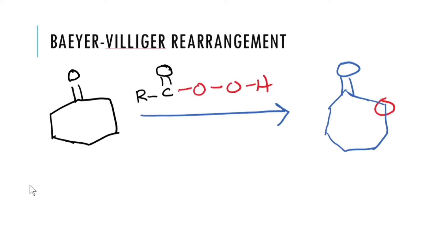The next rearrangement we will be considering is the Baeyer-Villiger rearrangement. This is a very interesting reaction — if you start from a ketone such as cyclohexanone, you end up with a 7-membered ring.